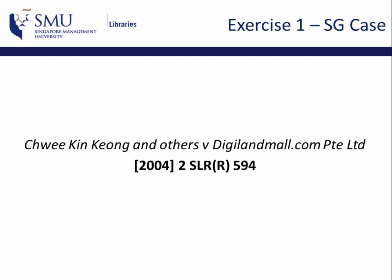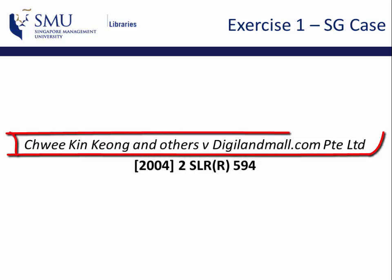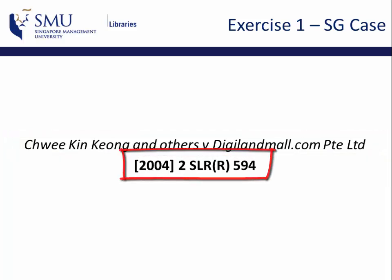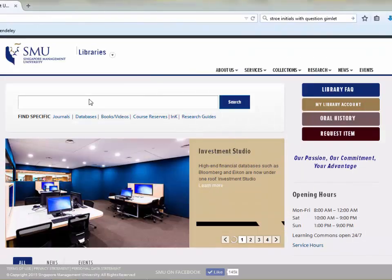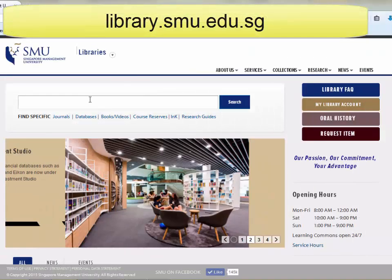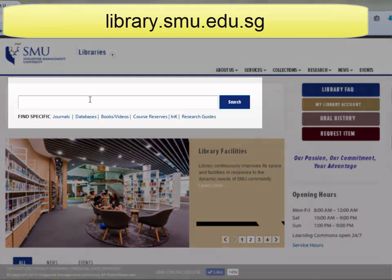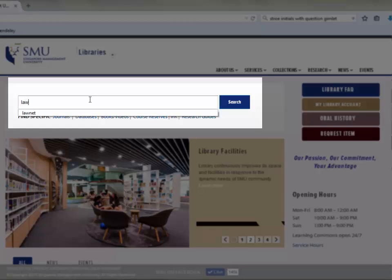Now, let's try to find this case in LawNet. We shall use this citation as an example. Here are the names of the parties involved, and the full citation as to where and when it was reported. LawNet is one of the databases that you can use to find case law. To access LawNet, simply go to the library website and search for LawNet.